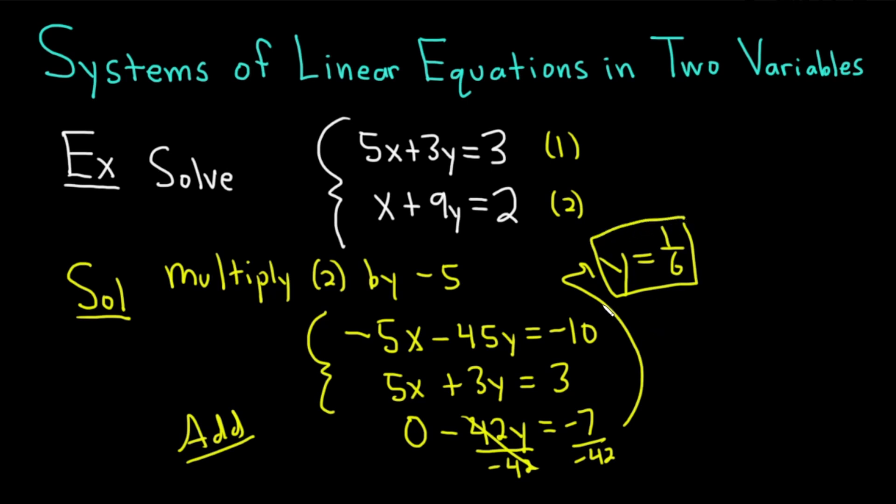Now we have to find x. To find x, we can just plug it into either of the equations. I'm thinking we should use the second one here, x plus 9y equals 2. Let's go ahead and do that. We're going to take this y and just put it right there. So it'll be x plus 9 times y. But y is 1 over 6. So 1 over 6. And that's equal to 2.